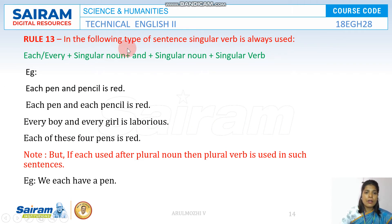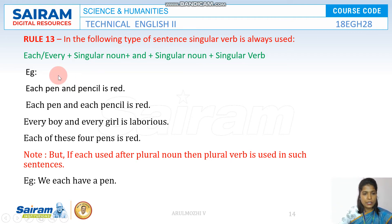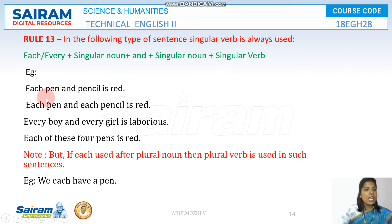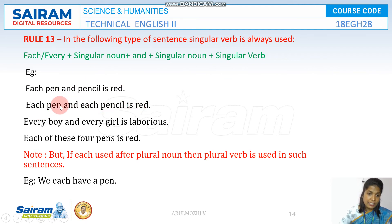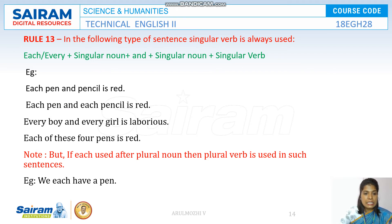Rule number 13: Indefinite pronouns such as 'each' and 'every' always take a singular verb. For example: 'Each pen and pencil is right.' Even 'each pen and each pencil is red.' 'Every boy, every girl is laborious.' 'Each of these four pens is red.' Even when you have two 'each' phrases, you still use a singular verb.